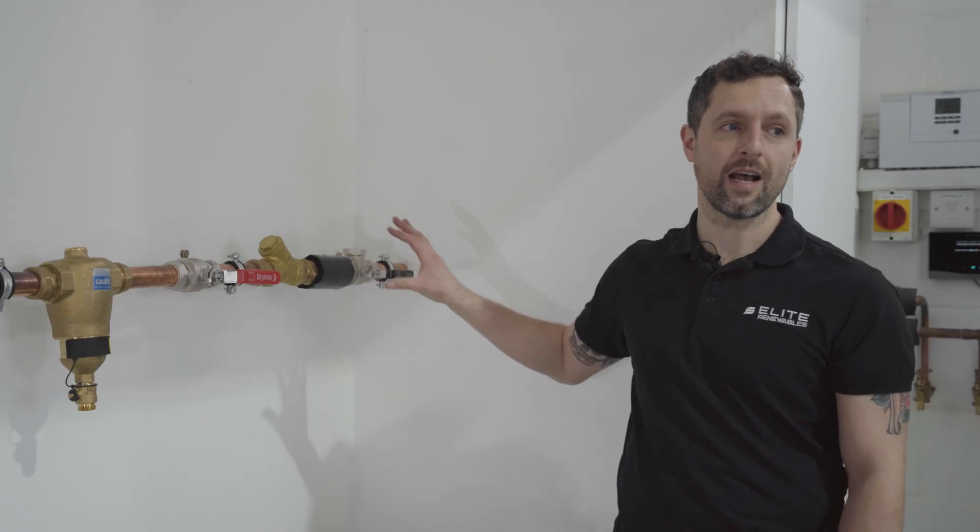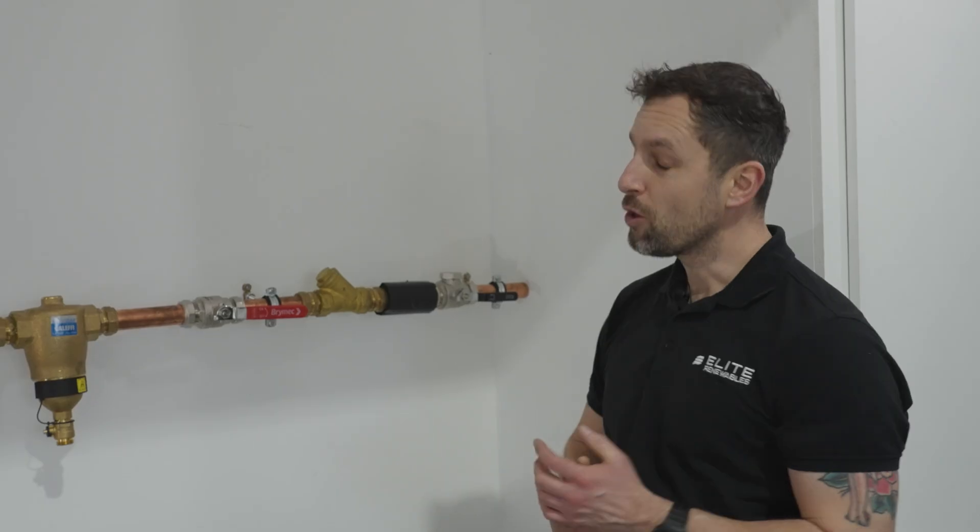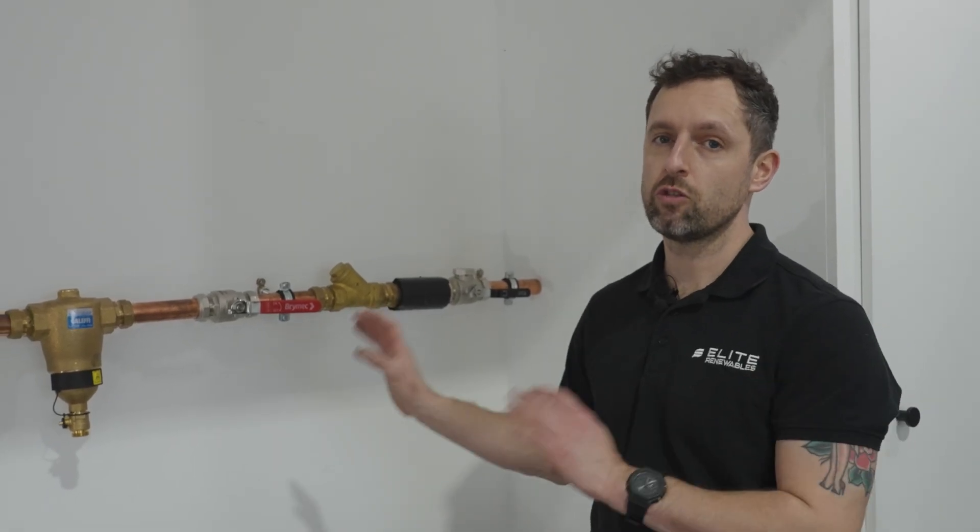System filters are going to get blocked up. They are serviceable items so when you get your annual service done every year by Elite Renewables we will check these filters as part of that service package, but you might find that somewhere between that service and the next service the filters do get blocked up. A couple of reasons for that: it might be that your system is particularly dirty and needs an extra bit of care and attention.